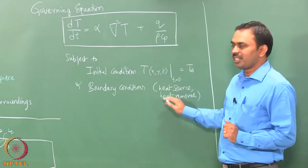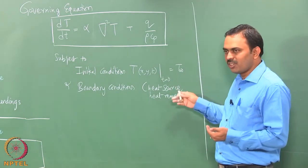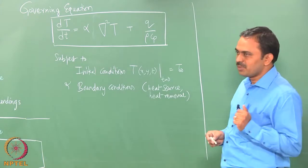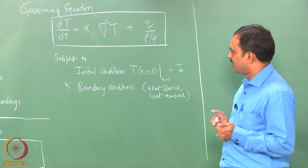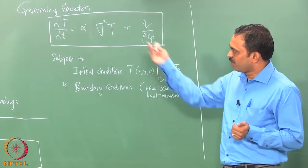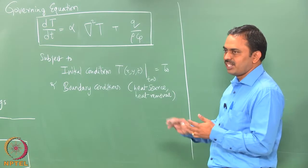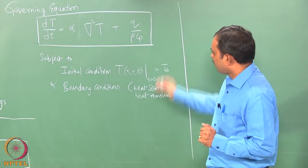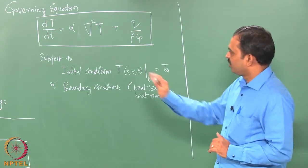The initial conditions specify temperatures at every location in the domain — normally ambient temperature, but preheat temperature can also be applied. The boundary conditions have two parts: the heat source coming on the surface of the weldment, and the heat removal processes through conduction, convection, and radiation at all relevant walls. This completely poses the problem and we can proceed to do thermal modeling of the solid.